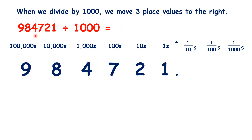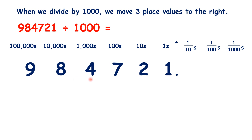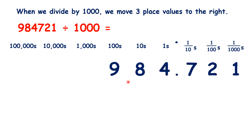And finally, what is 984,721 divided by 1,000? We move the digits three places to the right, and that gives us our answer: 984.721.